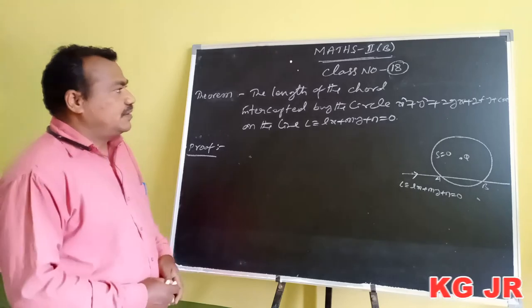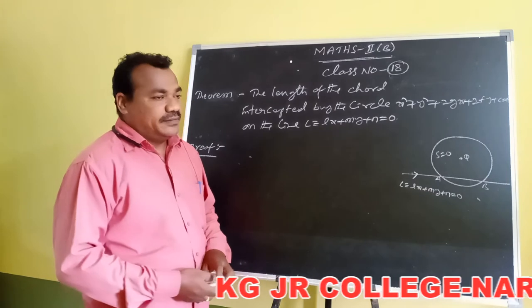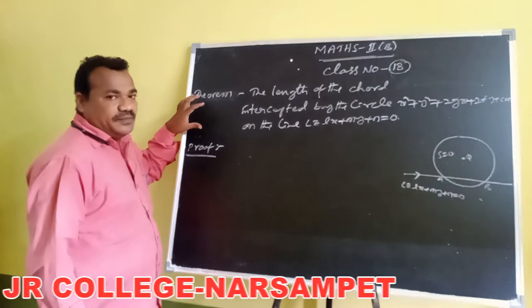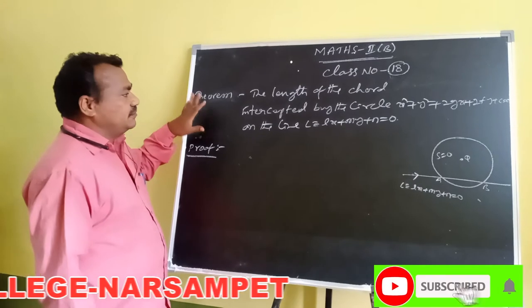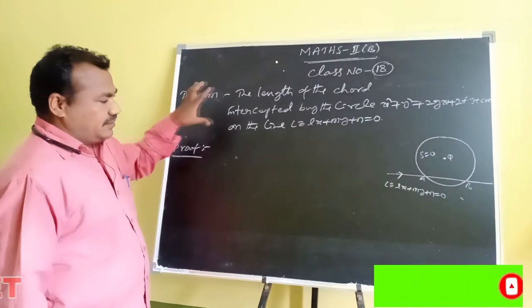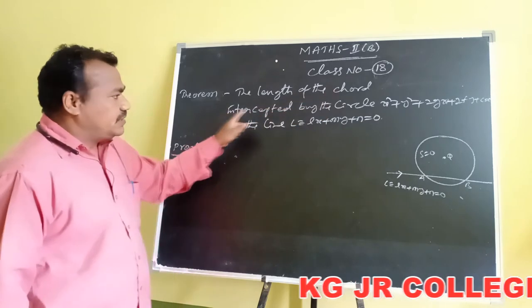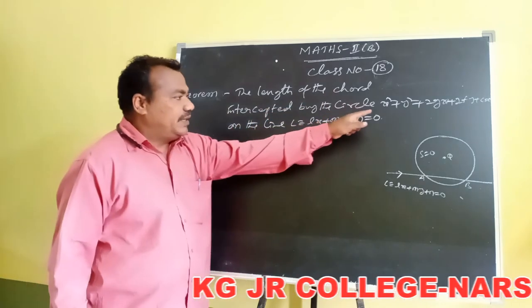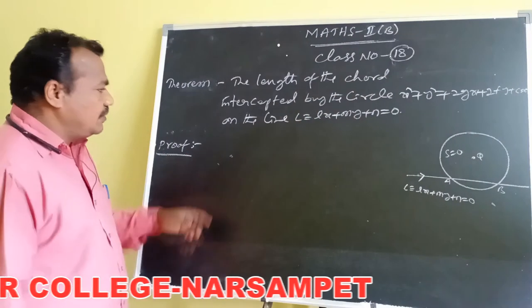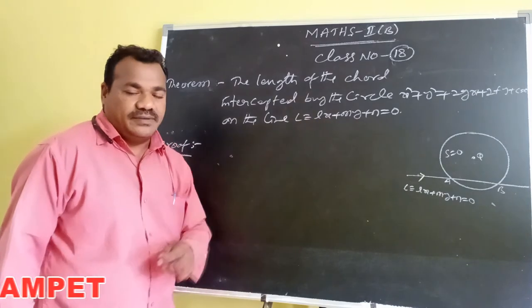Hello students, today is class number 18 for the second year students. This is one of the most important theorems for finding the length of the chord. The statement of the theorem: the length of the chord intercepted by the circle x² + y² + 2gx + 2fy + c = 0 on the line L: lx + my + n = 0.